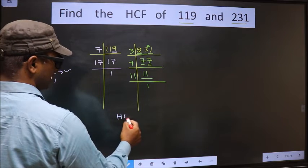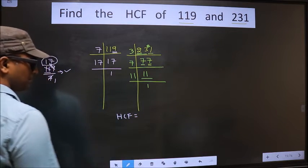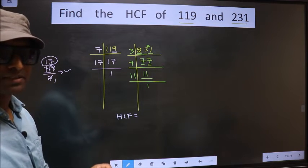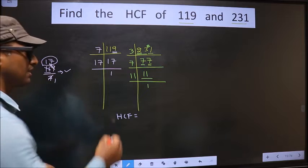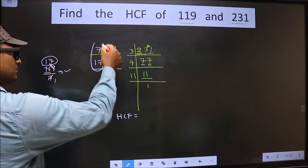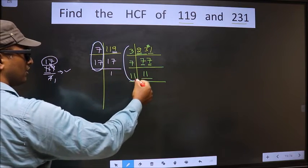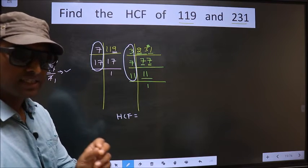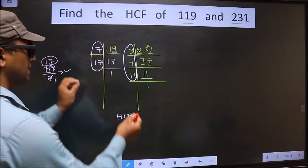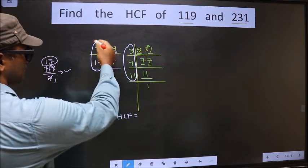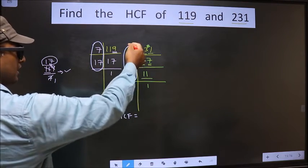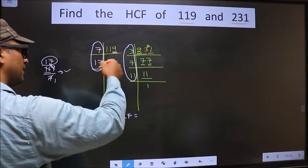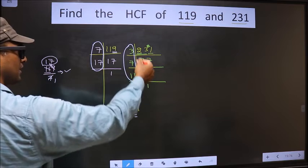Now our HCF is... HCF is the product of numbers which should be present here and also here. I repeat: HCF is the product of numbers which should be present in these two places. Okay. Now let us find the numbers which are present here and also here.